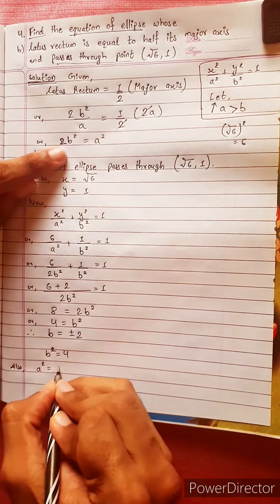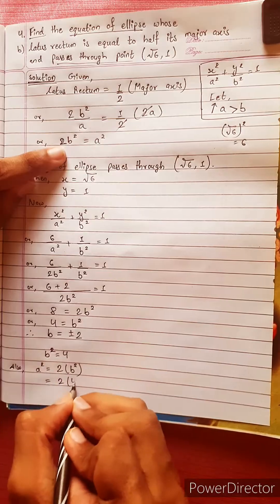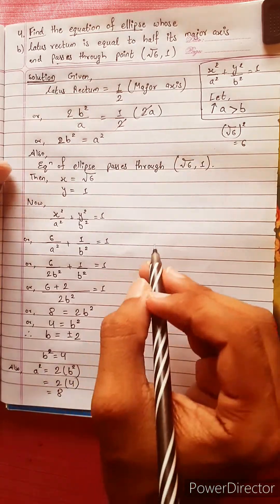Also, a² value: a² equals to 2 times b² equals to 2 times 4, equals to 8.